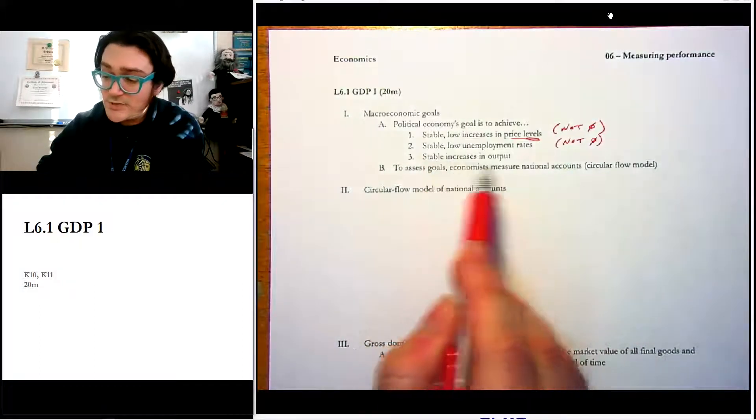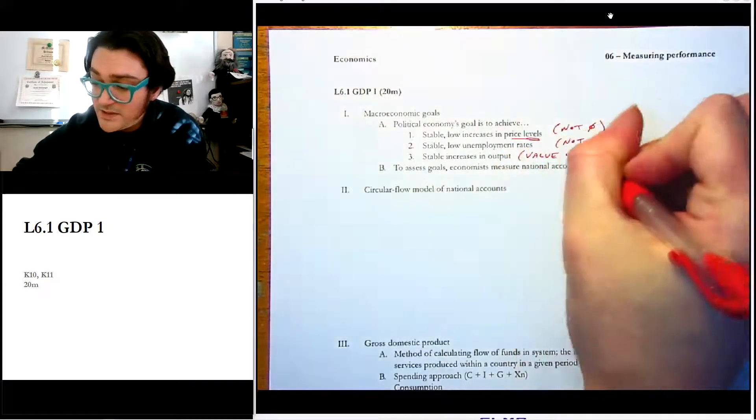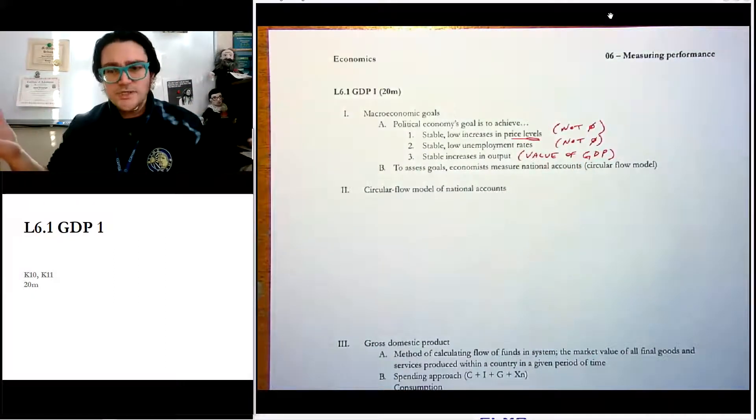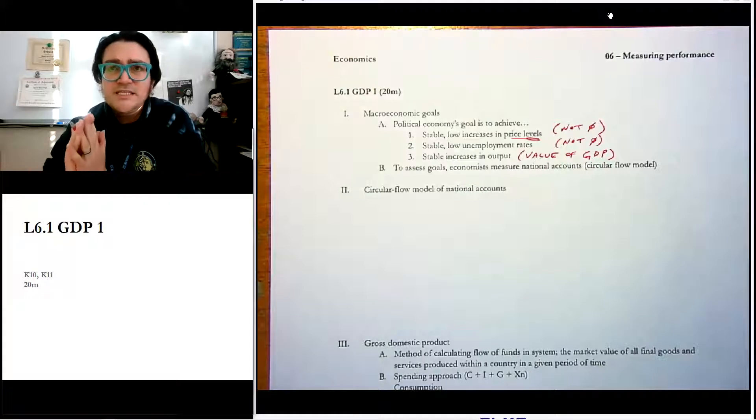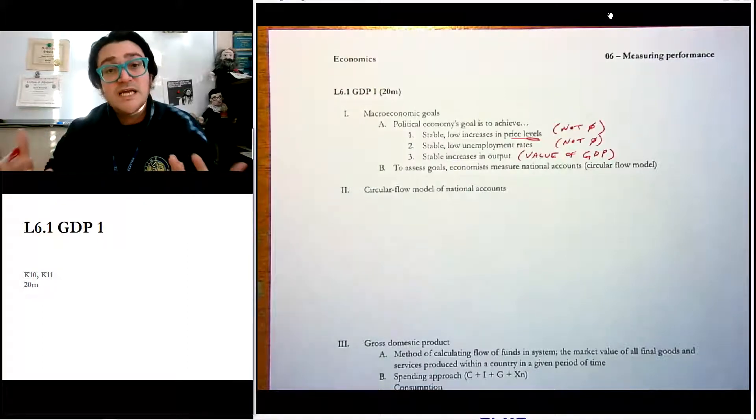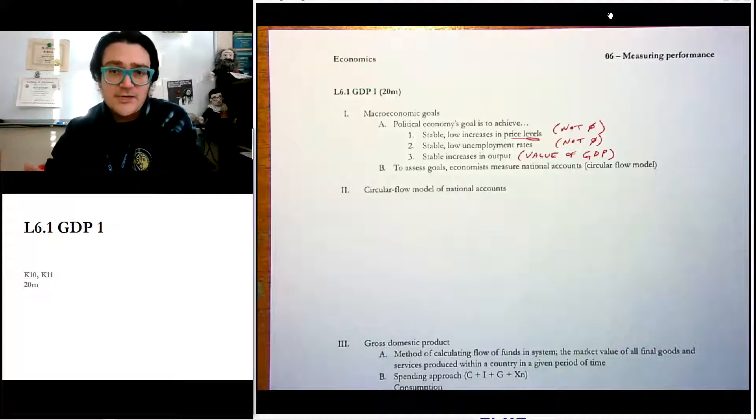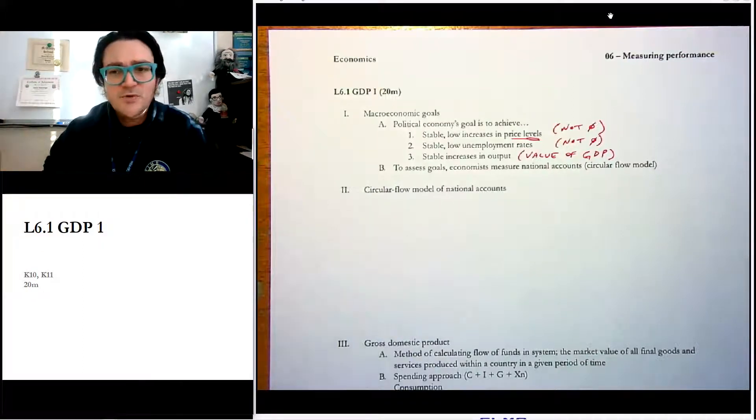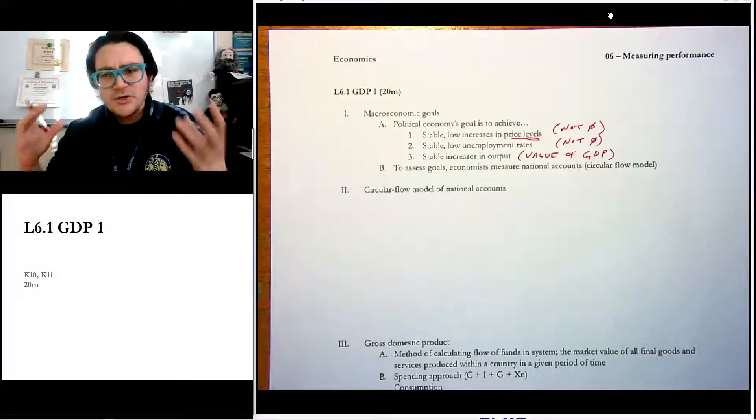And this third thing, stable increases in output, that's actually this topic. So this is the value of GDP, is in fact what that is. We want GDP, gross domestic product or output to go up. And the reason why, and I don't want to spend too much time on this question, but I think it's valuable here, is to say that it's one of the ways that we can define something called standard of living. Really, I like to say that economics is about trying to make people's lives better. When we talk about this stable increases in output, what we're really meaning there is that we take all the value of all the goods and services an economy produces, we divide it by the number of people in that country, and we could say that's roughly the standard of living.